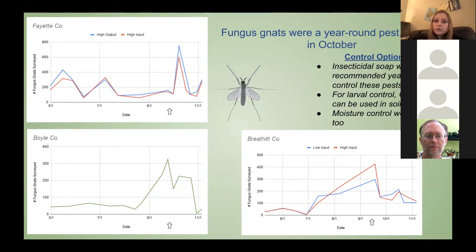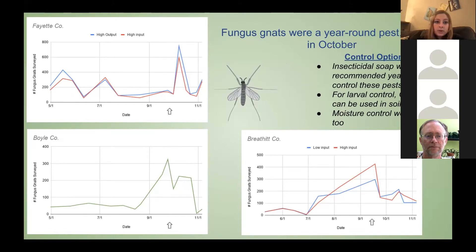For controls for fungus gnats, you can use moisture control — watch irrigation and keep temperatures high enough that water will evaporate. You can also use insecticidal soap, which is what I recommended. You can also use beneficial nematodes in the soil to help with the larvae.